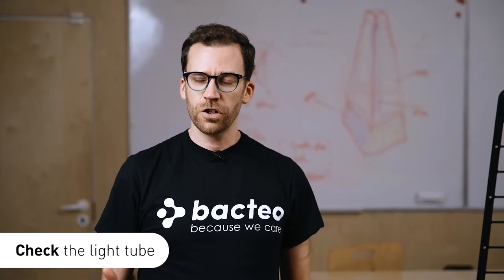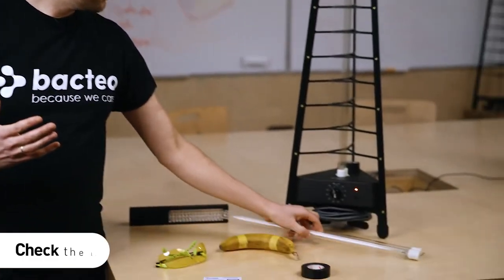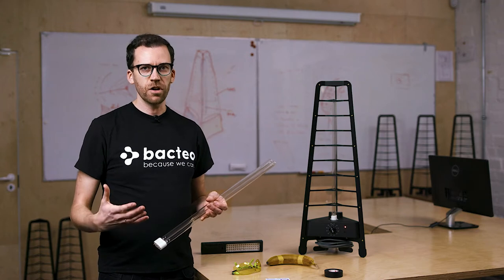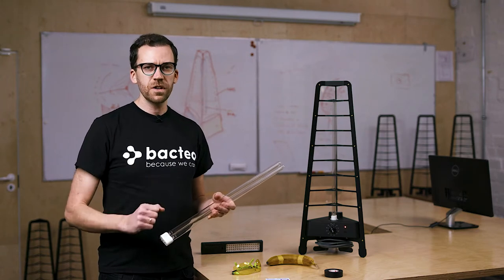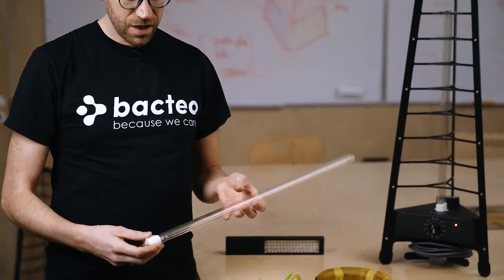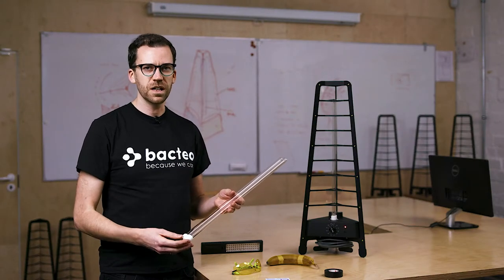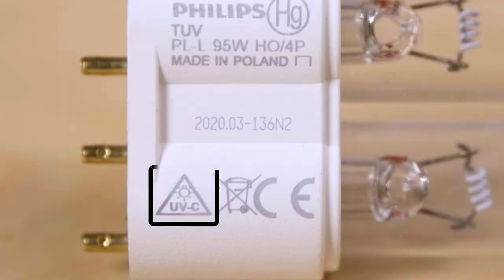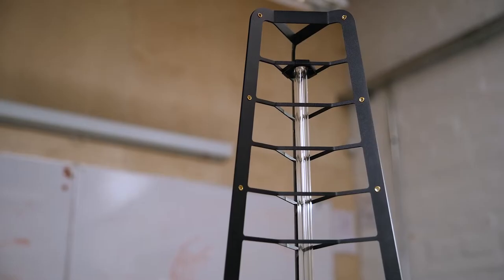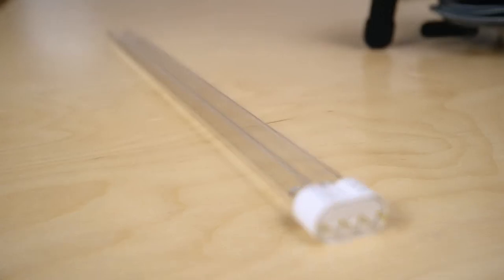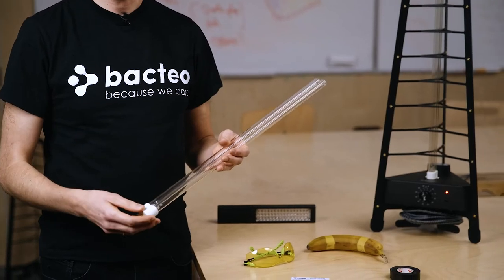So the very first thing you should look for is what kind of light tube you have. Now of course there are UVC lamps that use LED lights, but they're not very powerful at all. So most UVC lamps will have a light tube like this. Now there are a couple of key features to look for to show that you've got a genuine UVC light tube like this one by Philips which the Bactio uses. First of all, it should be clear. UVC light tubes use quartz glass which actually allows the UVC through.